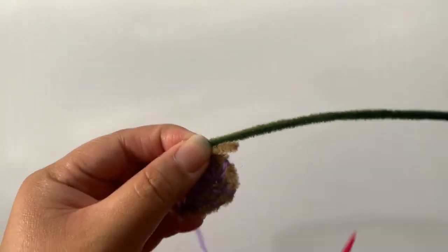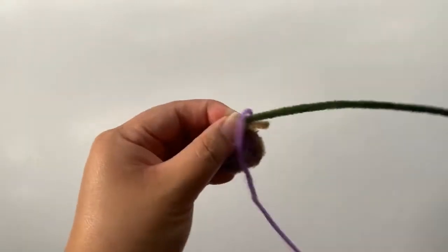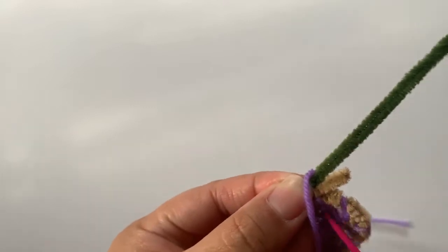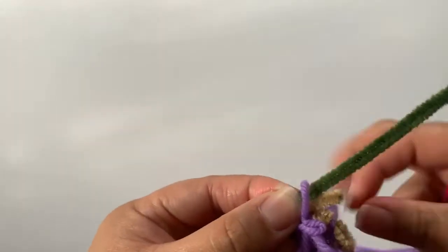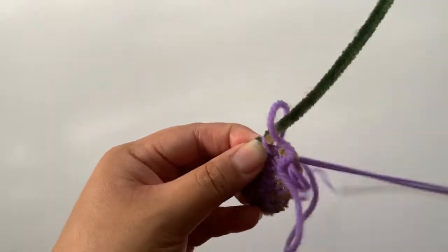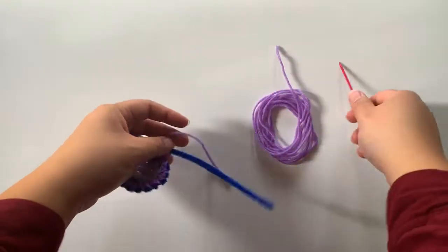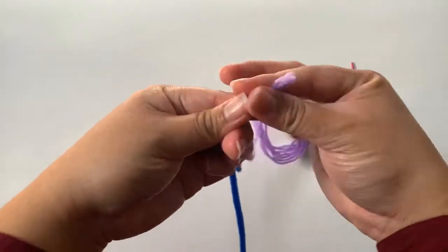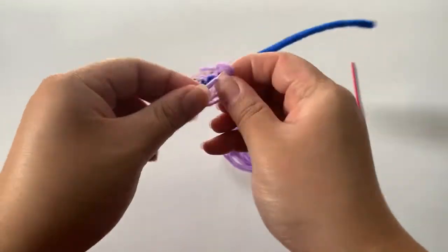Attach new pipe cleaner by overlapping the ends and sewing through all three layers. If you run out of yarn at any point you can use a simple knot to add on more yarn.